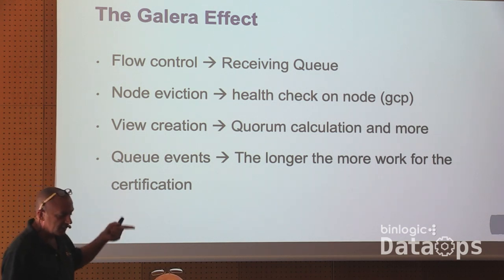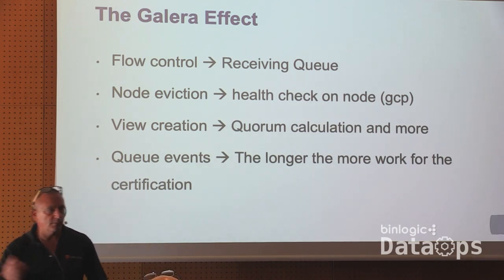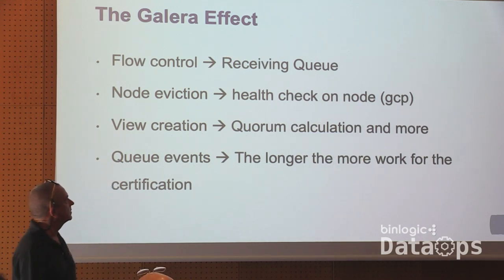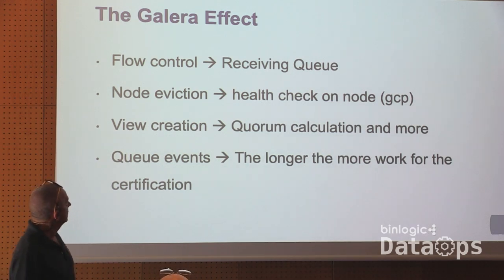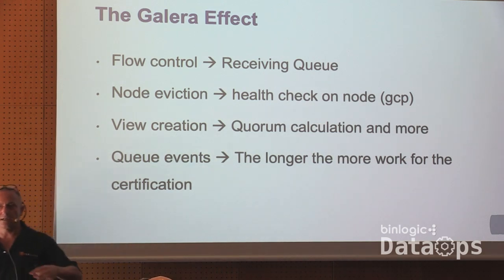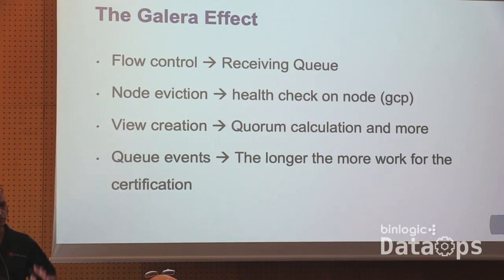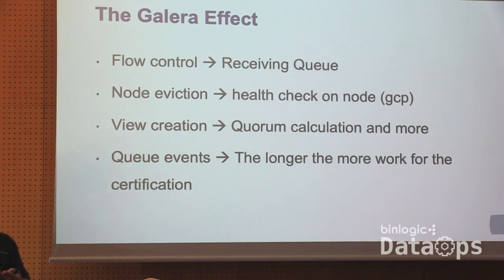In Galera, you will have flow control triggered by the fact that it cannot process all the requests — the distributed node will lag behind. You will have node eviction and different quorum calculations and view creation. Every time that happens, Galera needs to stop and say: 'Wait, I don't know who is going away. Let me calculate the quorum. I need to create a different view' — which defines how the cluster is composed. Everything stops, then starts again. This causes instability in the service.